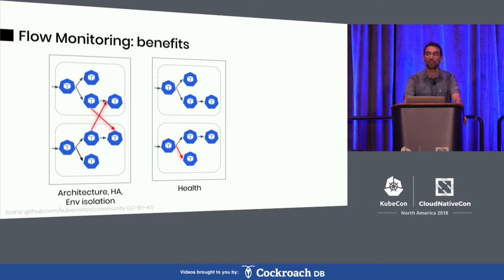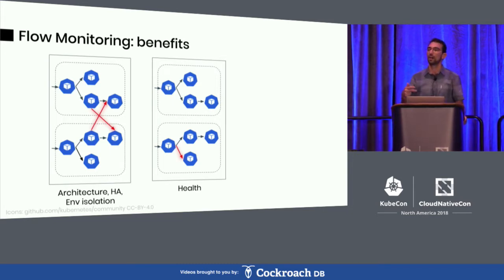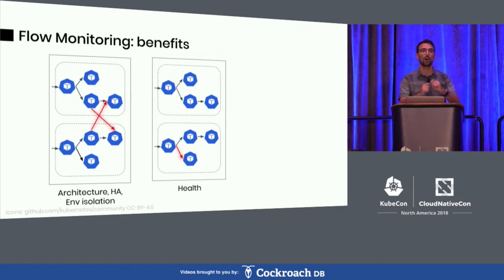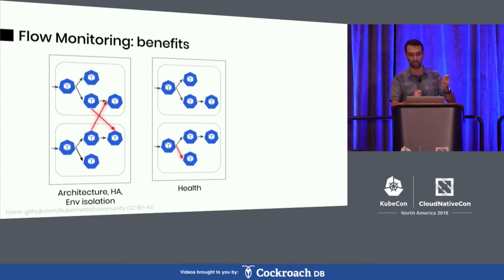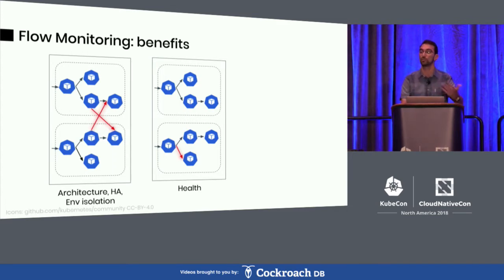Second, monitoring health. It's easy to introduce bugs, configuration errors, and incompatibilities. For each service that you're running, for the upstream services, which interaction is unhealthy? How can you find that? Which versions are affected? Which services are affected in which availability zones?